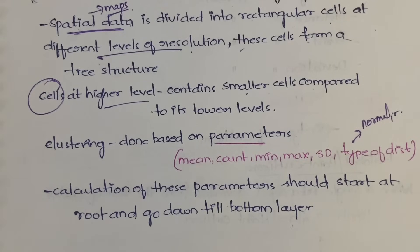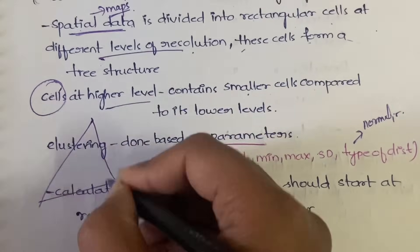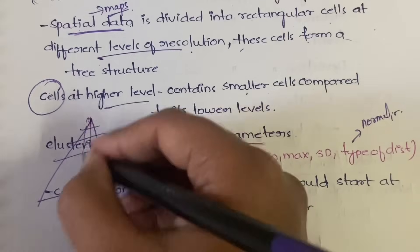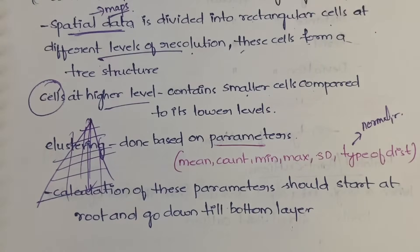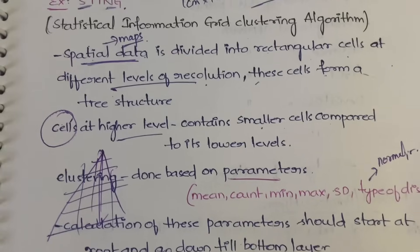For each and every cell, you have to calculate the parameters and cluster that cell. The calculation starts from the top level and goes down to the bottom layer. You start from the top and work your way down to the bottom, calculating and clustering at each level. This is how grid-based clustering works — you divide the data into cells and cluster based on those cells. The example algorithm for this is STING.